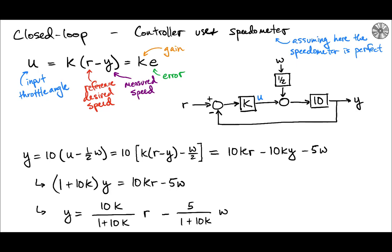So now if we stick this definition of u, k times r minus y, into our expression for y then we substitute that in and we get an expression that has elements of k, r, y, and w. And so we have y is equal to 10 kr minus 10 ky minus 5w. And so we have y on both sides. So what we're going to do is we're going to aggregate all of our y's together on the left-hand side and solve for y and now we get an expression of this ratio here, 10k over 1 plus 10k, that multiplies our reference r.